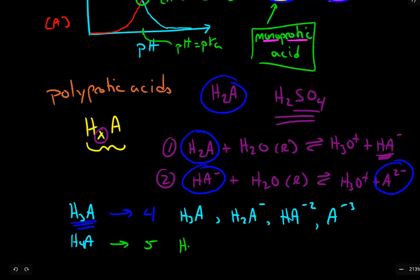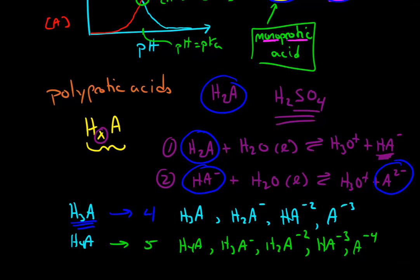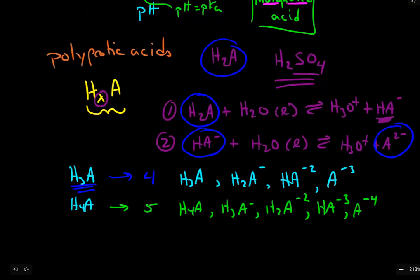We would have H4A, H3A-, H2A2-, HA3-, and finally the fully deprotonated version, A4-. And just note here that these charges are relative. So I'm saying that we're starting with a neutral acid, so each time we deprotonate that acid, we end up decreasing the charge by exactly one.